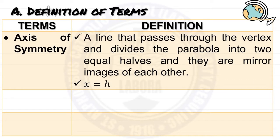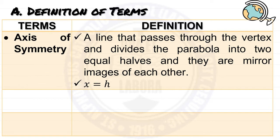Next is the axis of symmetry. It is a line that passes through the vertex and divides the parabola into two equal halves that are mirror images of each other. To get the value of the axis of symmetry, it is equivalent to h, or x equals h.